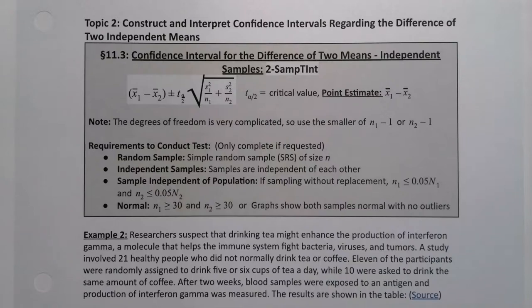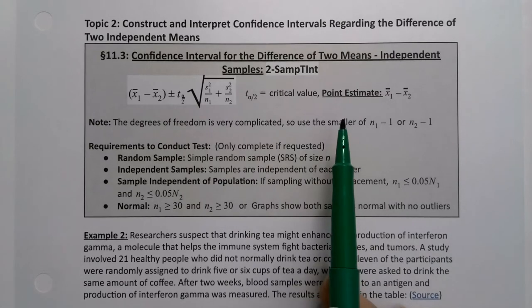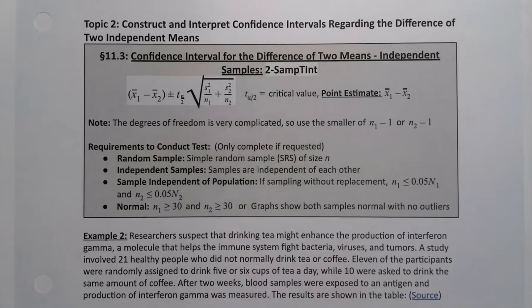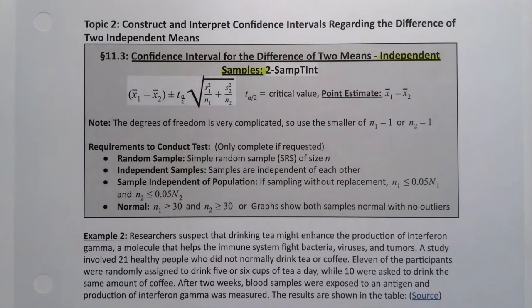Of course, if we can conduct a hypothesis test, that means we can also construct a confidence interval, which is the other type of inference that we do. So we want to construct a confidence interval for the difference of two means for independent samples, which would be a 2-samp-t-int on the calculator.